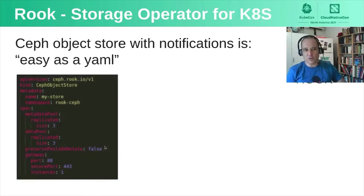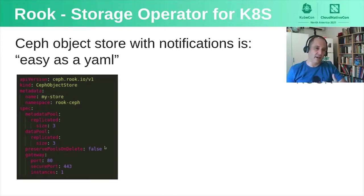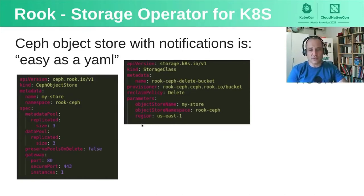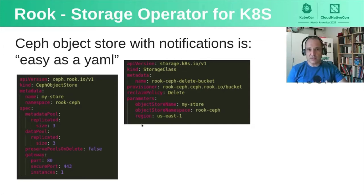The first thing is to define the Ceph object store YAML, giving it parameters for replica set size, replication, pools, and the object gateway. Once that is set up, you define the storage class — the type of storage you have. Each bucket must belong to a specific storage class. Storage class has parameters like the claim policy that distinguish how storage should be handled by the buckets belonging to it. Then you define an object bucket claim, which generates the actual buckets.